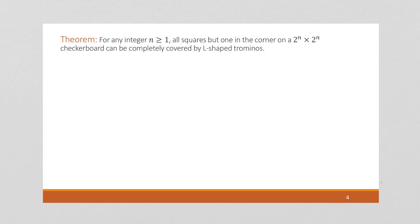The theorem we're trying to prove may seem a little artificial, but it's interesting. For any integer n greater than or equal to 1, all squares but 1 in the corner of a 2-to-the-n by 2-to-the-n checkerboard can be completely covered by L-shaped trominos. Let's do a couple of quick examples to make sure we're all on the same page.